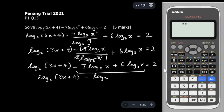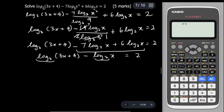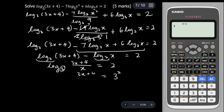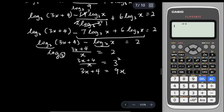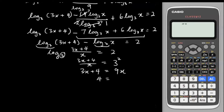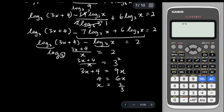Combining the log₃x terms: −7 log₃x + 6 log₃x = −1 log₃x. So we have log₃(3x + 4) minus log₃x equals 2. Since both logs have base 3, we combine them into one log: log base 3 of (3x + 4)/x. Solving gives 6x = 4, so x = 4/6 = 2/3. That is the answer.